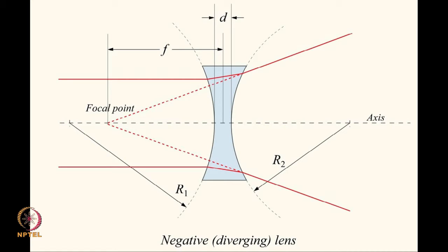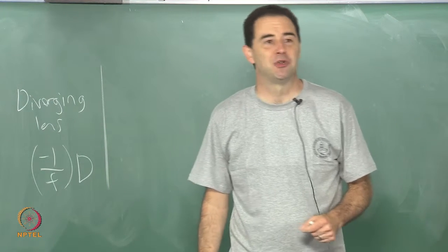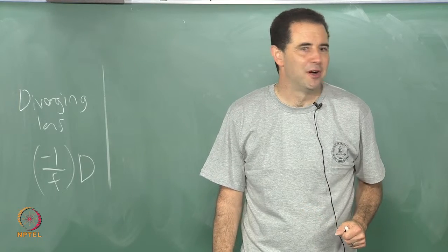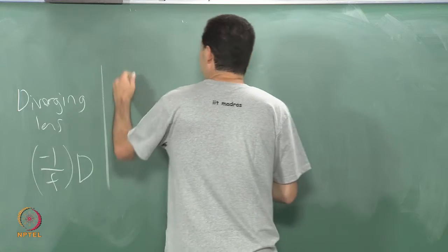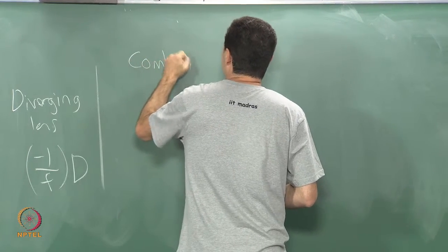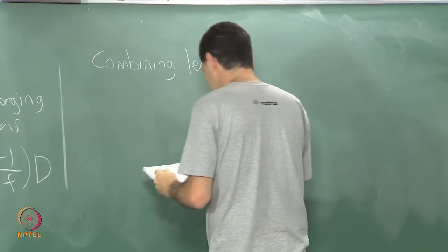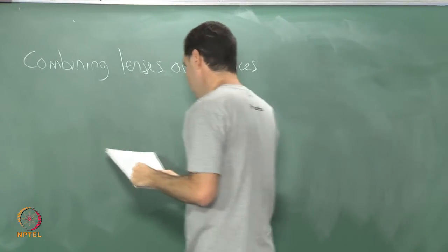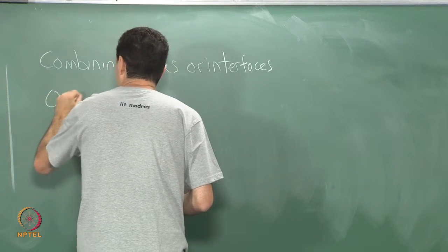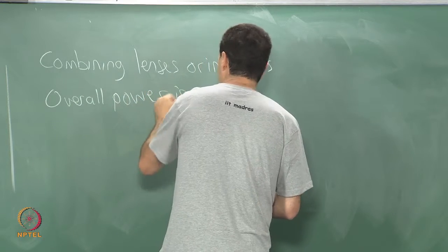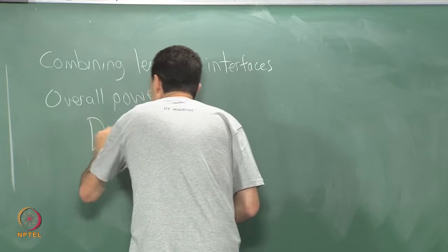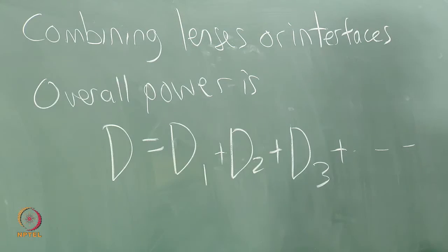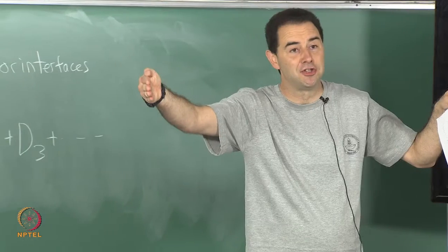There is one very nice property about using diopters and this is why optometrists prefer to use it. Those of you who have prescription glasses may have heard a lot of discussion about diopters in correcting your vision. What is nice is that in combining lenses or interfaces between media, the overall power is D equals D1 plus D2 plus D3 plus dot dot dot. You just take the diopter of your lenses that are all together sequentially in a system and just add them up.